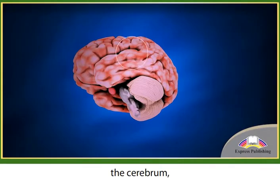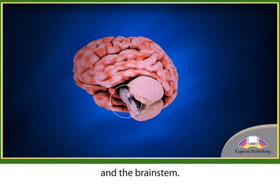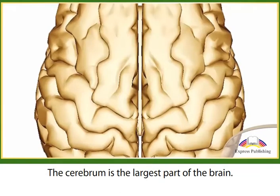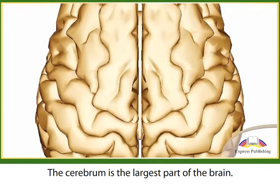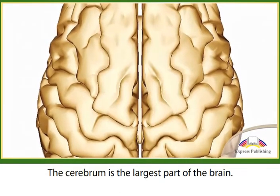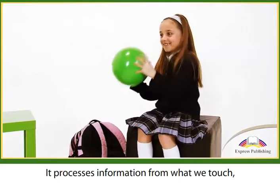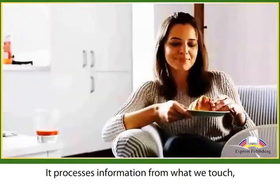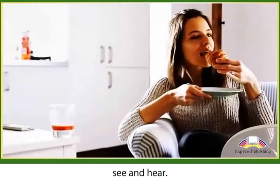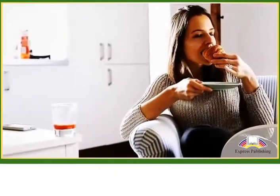the cerebrum, the cerebellum and the brainstem. The cerebrum is the largest part of the brain. It processes information from what we touch, see and hear.